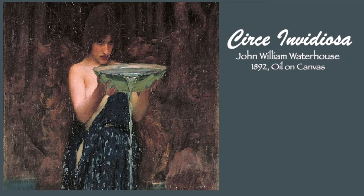The history behind Circe in Greek mythology is that she was an enchantress who was renowned for her vast knowledge of potions and herbs. The enemies of the people who offended Circe were turned into animals. The color scheme used in the painting consists of a plethora of green and blue shades, along with brown and flesh tones.